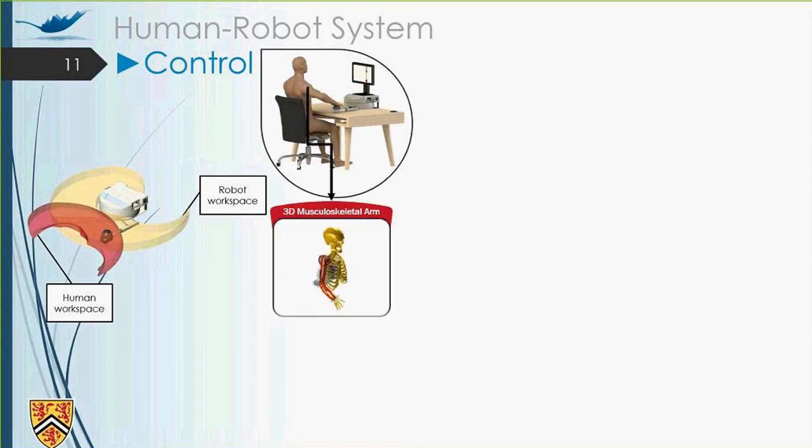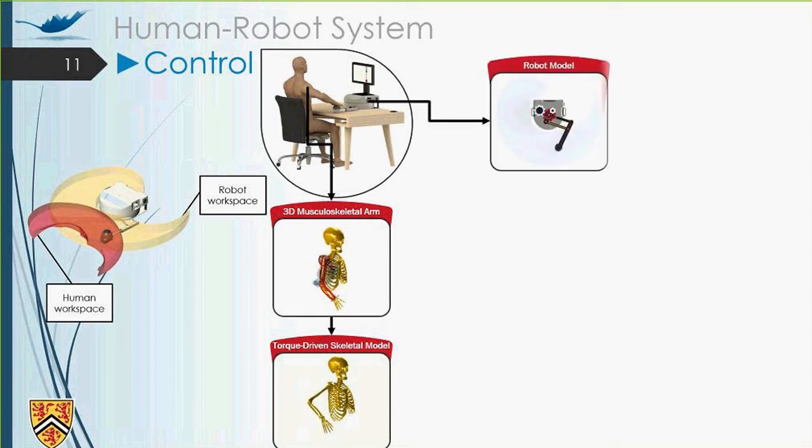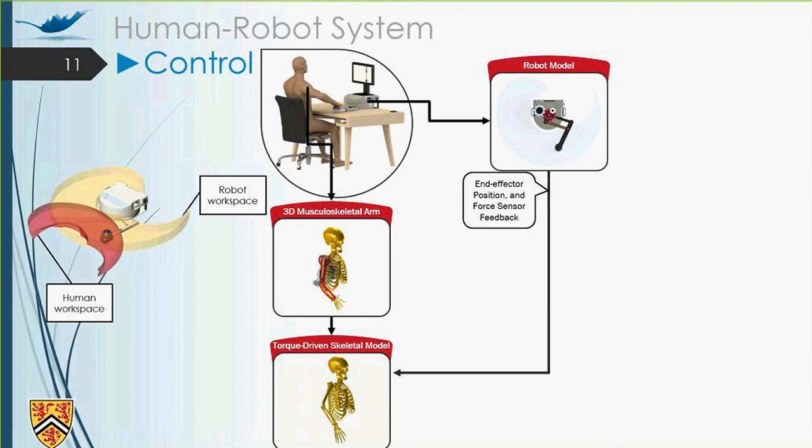On one side, as I said, we had 3D musculoskeletal arm. But for modification, for making it simpler, we considered to remove the muscles and include the polynomial functions to get the muscle links and moment arms and generate the torque-driven skeletal model. On the other side, we have the robot model, which has been imported from SolidWorks. The robot model gives the end effector position and force sensor feedback to the torque-driven skeletal model.